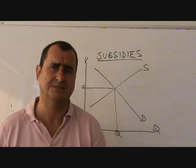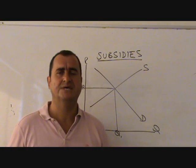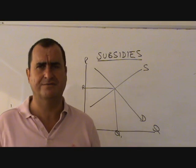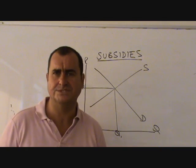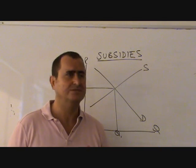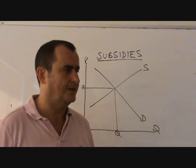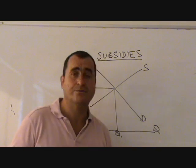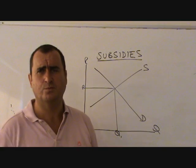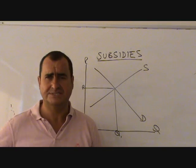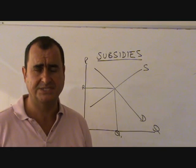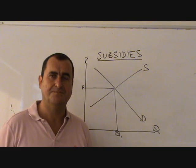The government hopes by giving producers a subsidy that will lower the price, and of course when you get lower price, the market forces indicate that there will be a greater quantity demanded. So this might be the case with eye tests or even some healthy foods and things like that. The government wants people to consume these goods more, a subsidy to the producers lowers price and encourages production.